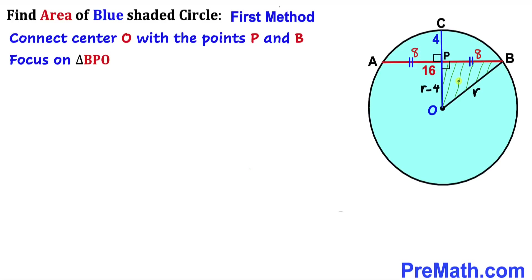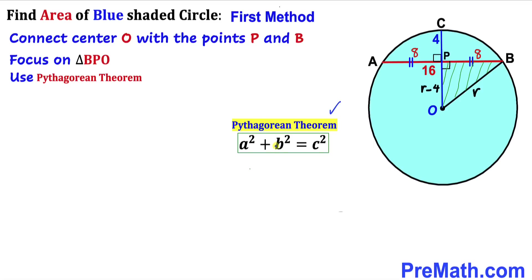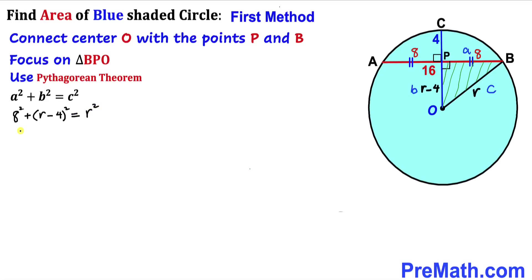In right triangle BPO, our side lengths are r (hypotenuse OB), 8 (leg PB), and r minus 4 (leg OP). We will use the Pythagorean theorem: A squared plus B squared equals C squared. Here A is 8, B is r minus 4, and C is r. So we get 8 squared plus (r minus 4) squared equals r squared.